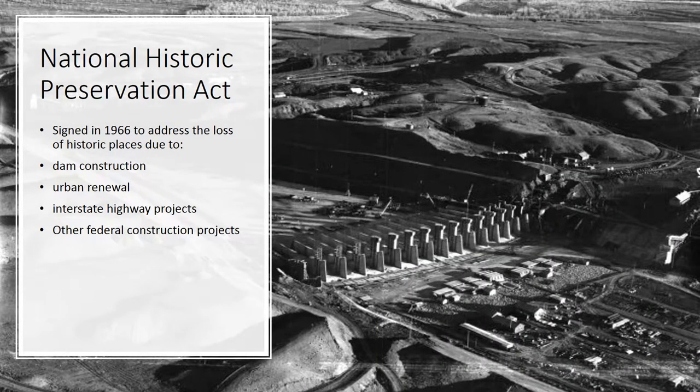The four-step process originates in the implementation and regulations for the National Historic Preservation Act. In 1966, Congress recognized that many federal actions resulted in loss of historic places and enacted the National Historic Preservation Act. Examples included dam construction, urban renewal, and interstate highway projects. The Preservation Act mandated that consideration of an undertaking's effects take place as part of early planning.